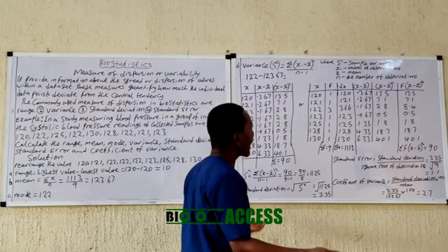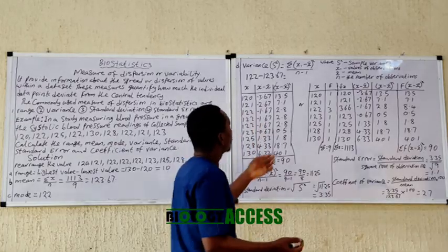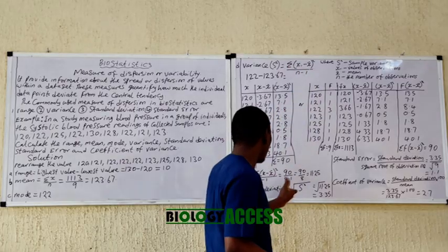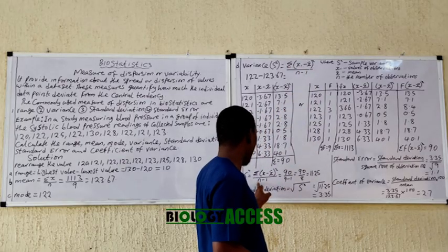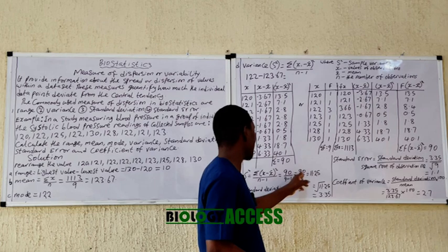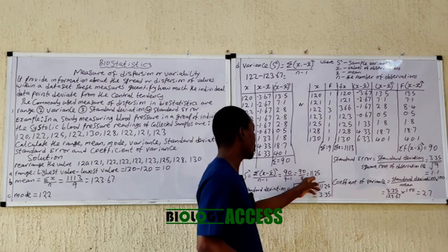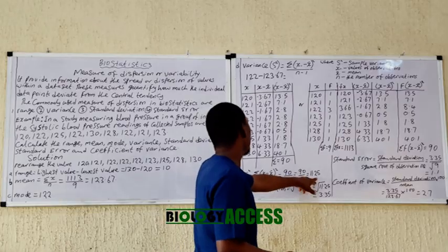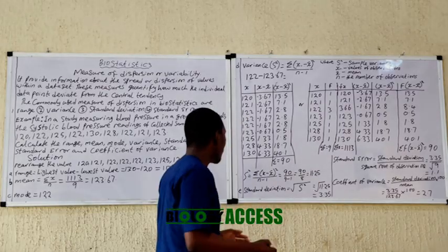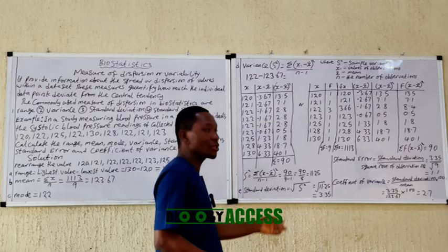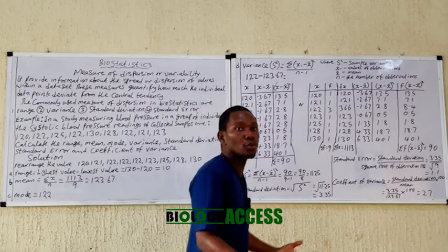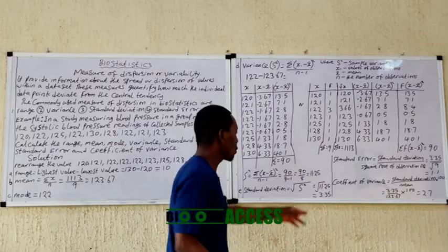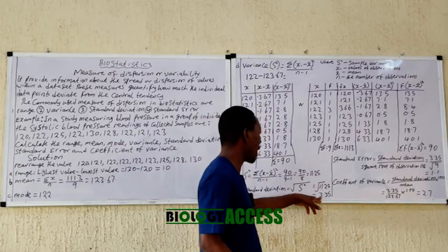Applying the formula: 90 divided by n minus 1, where n is 9, so 9 minus 1 equals 8. Therefore 90 divided by 8 gives the variance. The standard deviation is simply the square root of the variance. You take the square root of the variance value to get the standard deviation.